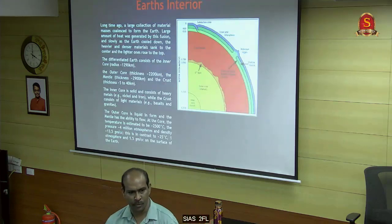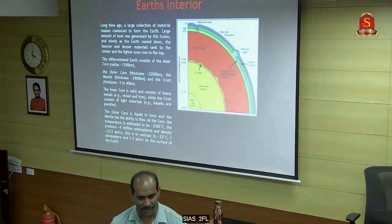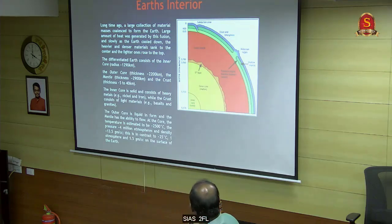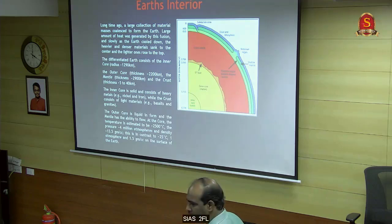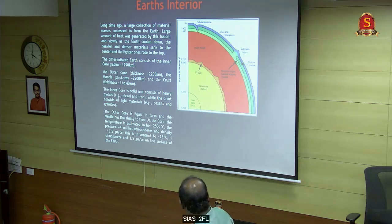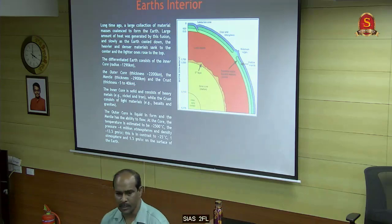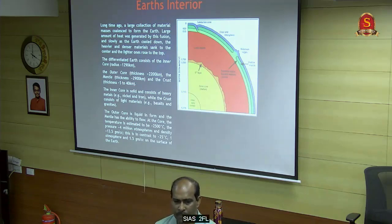Most of you know how earthquakes happen. The radius of the earth is 6,378 km. We have an inner core, outer core, lower mantle, and upper mantle. This top layer is called the lithosphere - litho means rock.